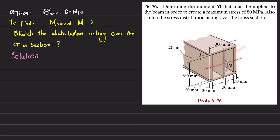What we are given is the maximum stress of 80 megapascal, and we have to find the moment M that can be applied to the beam, then sketch the distribution acting over the cross section. The maximum stress formula is: σ_max = Mc/I. We do not have M, but we have the cross section, so we will first find the moment of inertia.